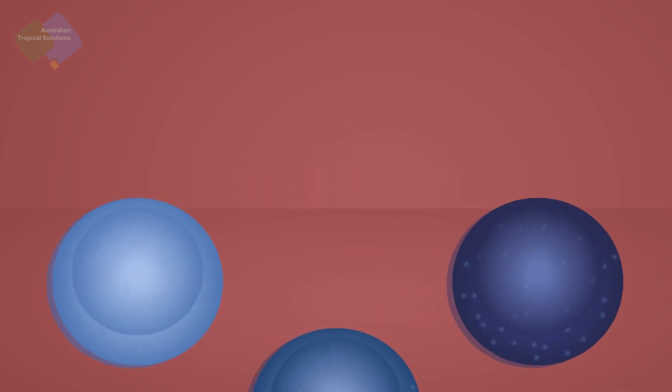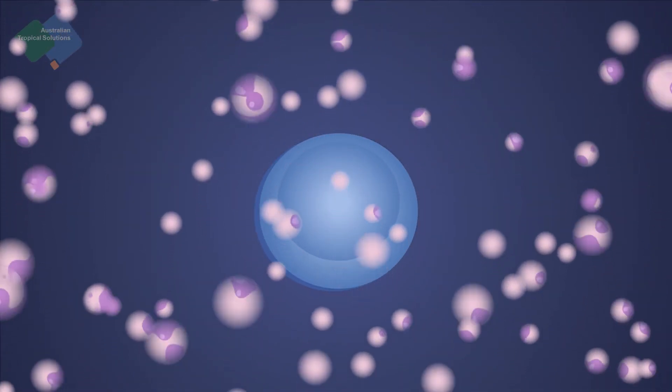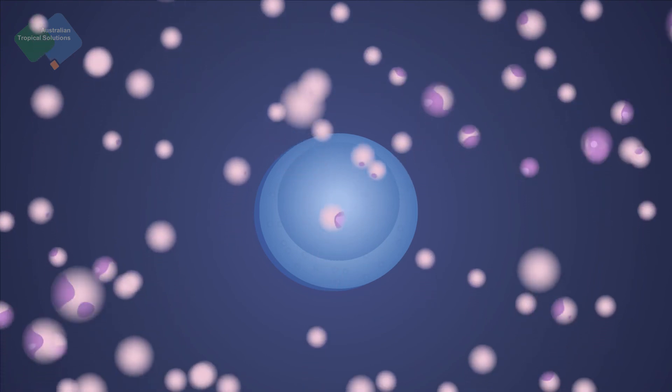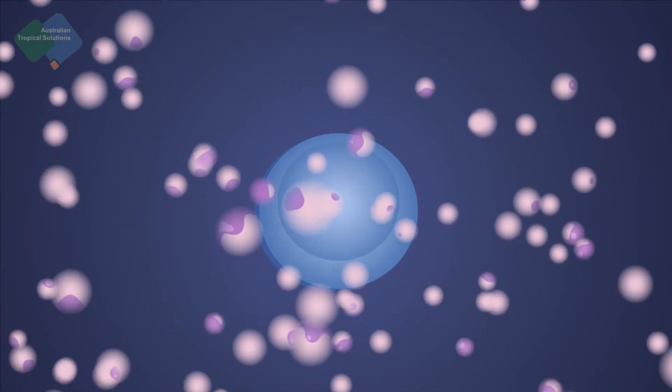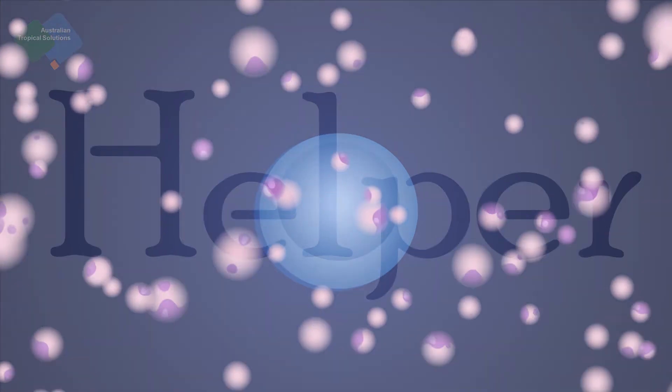There are two main types of T cells, helper T cells and the cytotoxic T cells. T helper cells provide help in the form of cytokines to B cells, so that they can enhance the production of antibodies by the B cells. That's why these T cells are known as helper T cells.